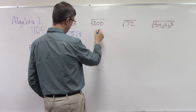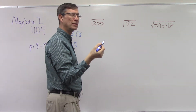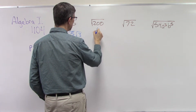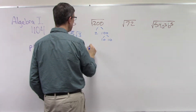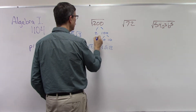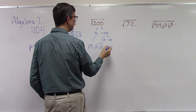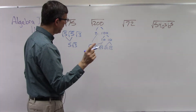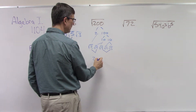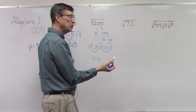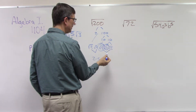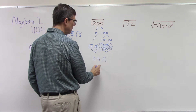For 200, a shortcut is knowing the square root of 100 is 10, but I'll show you the longer method. 200 is 2 times 100, and 100 is 10 times 10, so we have square root of 2 times square root of 2 times square root of 5 times square root of 2 times square root of 5. Now let's find combinations: square root of 2 times square root of 2 — a 2 pops out; square root of 5 times square root of 5 — a 5 pops out. But I still have a square root of 2 left, so the answer is 10 square root of 2.